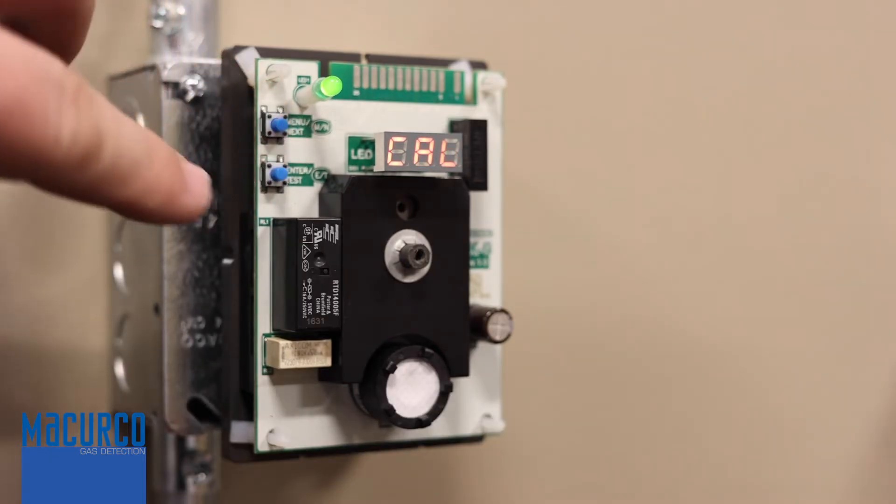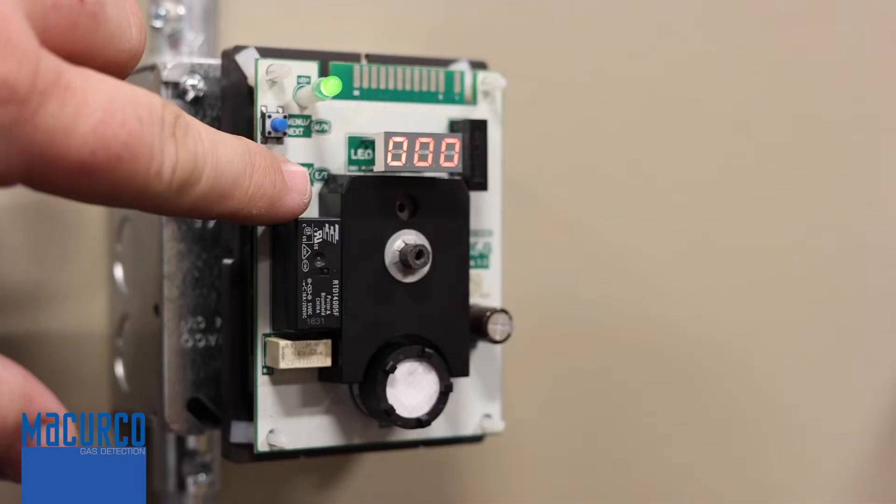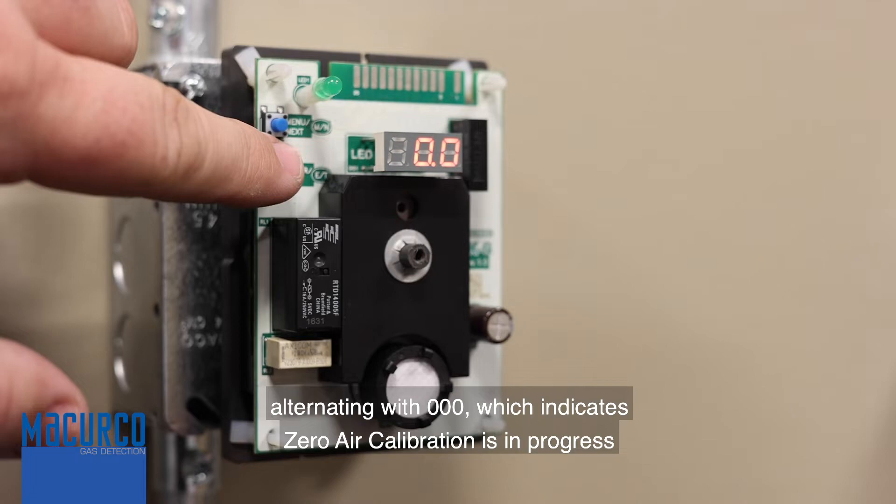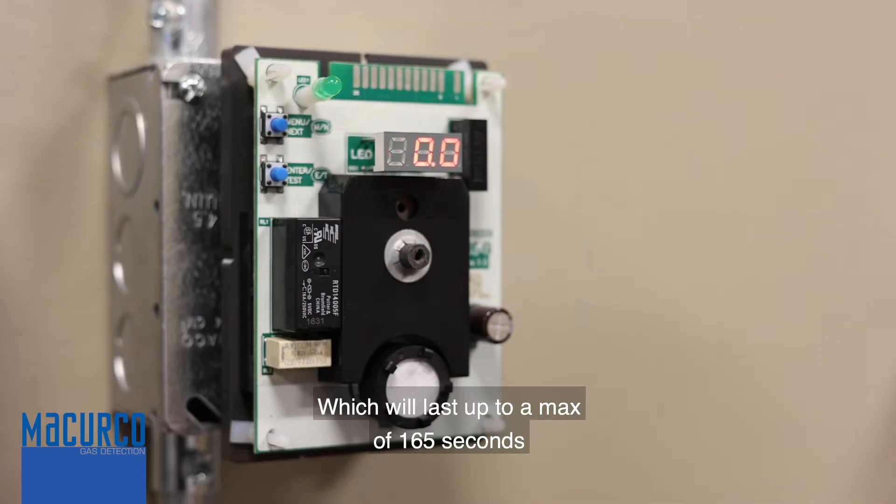Then press the enter button to get to zero zero zero or calibration zero mode. Press the enter button and the display will read 0.0 alternating with zero zero zero, which indicates zero air calibration is in progress, which will last up to a max of 165 seconds.